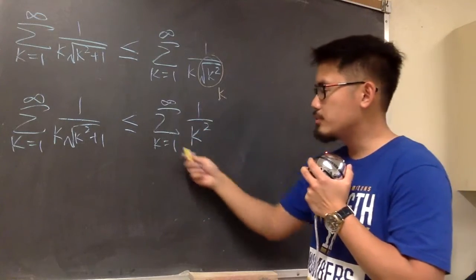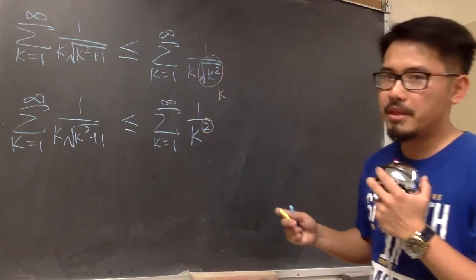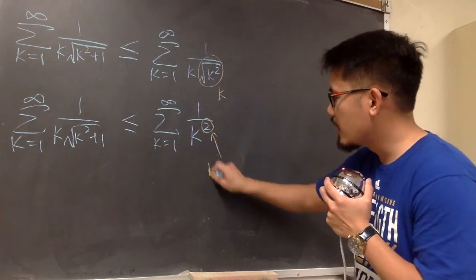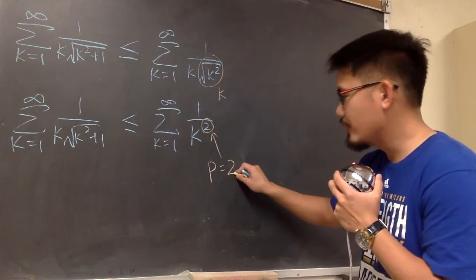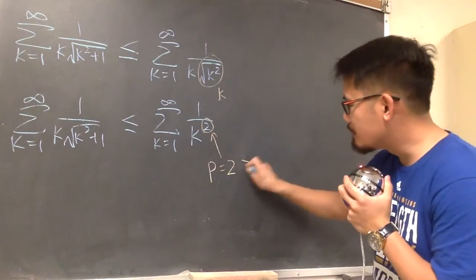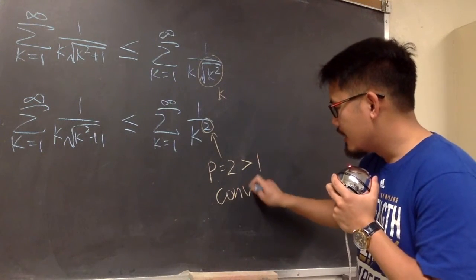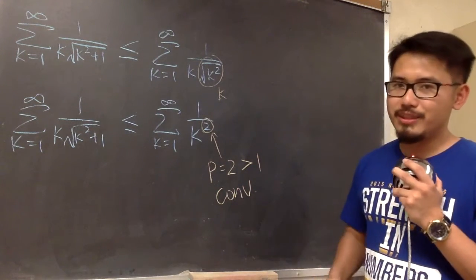And now, do we know much better about this one? Yes, we do, because this is just a p-series. We know right here, p is 2, but then don't just say p is 2. You have to tell me, 2 is bigger than 1. So you know, this right here converges by the p-series.